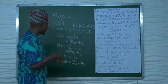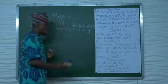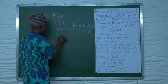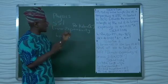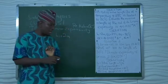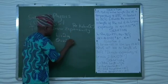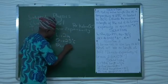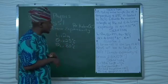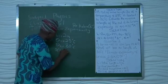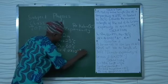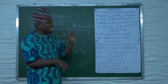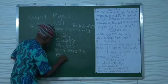Let's write out our parameters. The first thing given to us is the initial length, L1, which is 2 meters. The next thing given is the initial temperature, theta 1, which is 25 degrees Celsius. Then theta 2 is given as 80 degrees Celsius. The linear expansivity is given as 4.0 times 10 to the power of minus 3 per Kelvin. What we are looking for is the expansion — the increase in length — which is E. We don't know E.